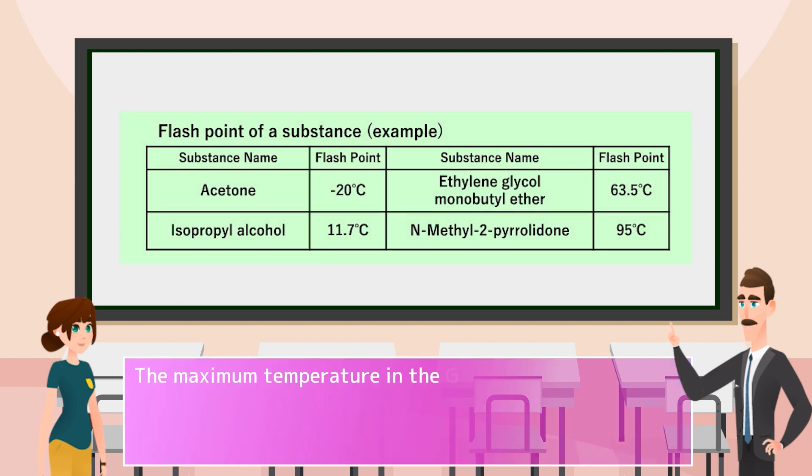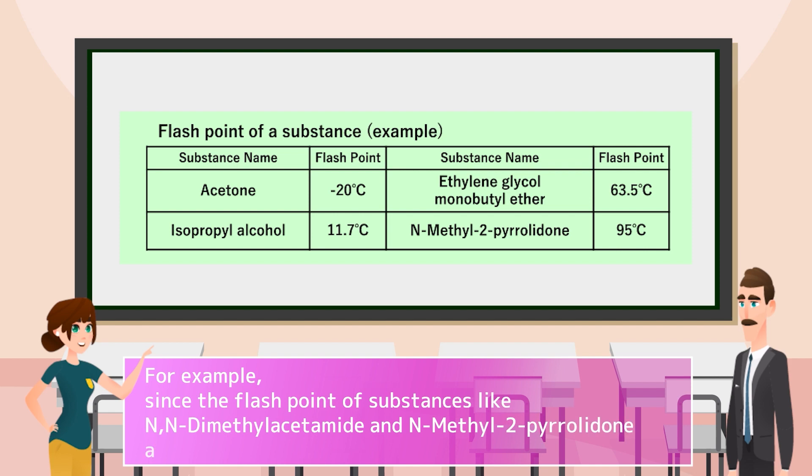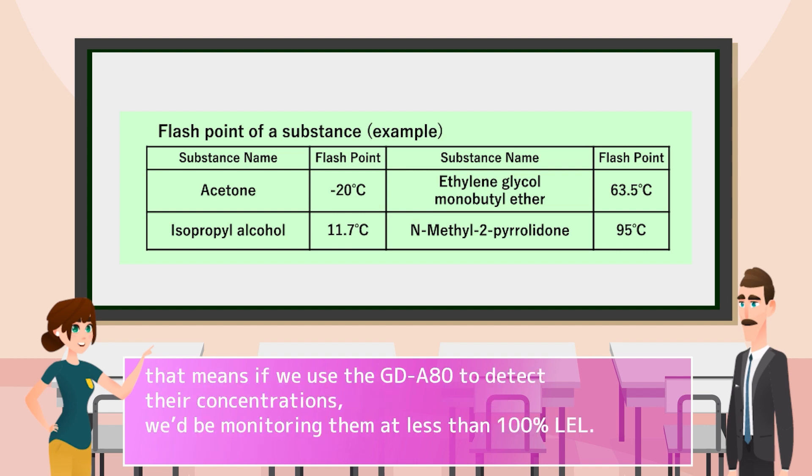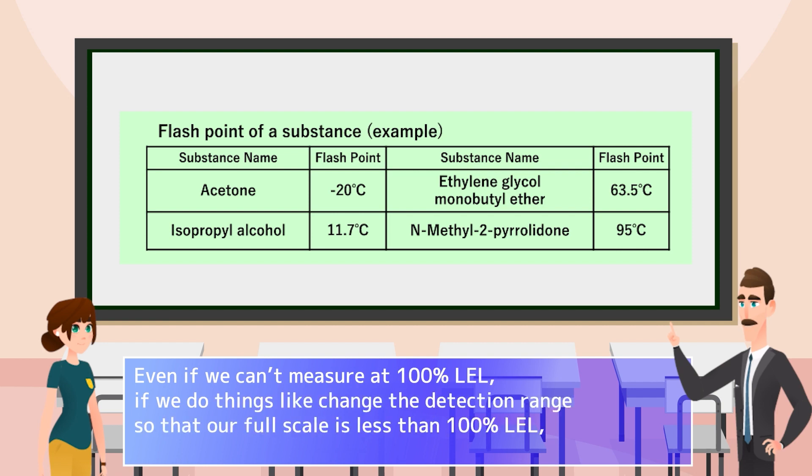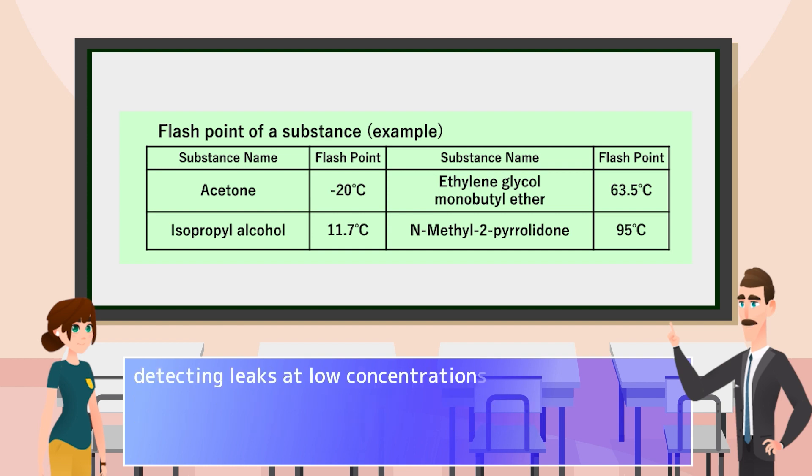The maximum temperature in the GDA80's operating temperature range is 53 degrees Celsius, right? For example, since the flash point of substances like N,N-dimethylacetamide and N-methyl-2-pyrrolidone are higher than 53 degrees Celsius, that means if we use the GDA80 to detect their concentrations, we'd be monitoring them at less than 100% LEL. Even if we can't measure at 100% LEL, if we do things like change the detection range so that our full scale is less than 100% LEL, detecting leaks at low concentrations would still be a way to prevent explosions.